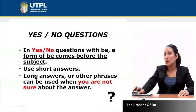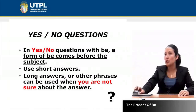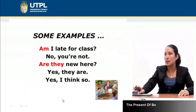As for yes/no questions, remember that they can be used in any tense — for example in the present tense, the past tense, or with any other grammar structure. In yes/no questions, the form of 'be' comes before the subject. This is a very important rule because you need to notice that we use short answers when talking about yes/no questions, and that long answers or other phrases are used when you are not sure about the answer. Let's pay attention to these explanations in order to understand them.